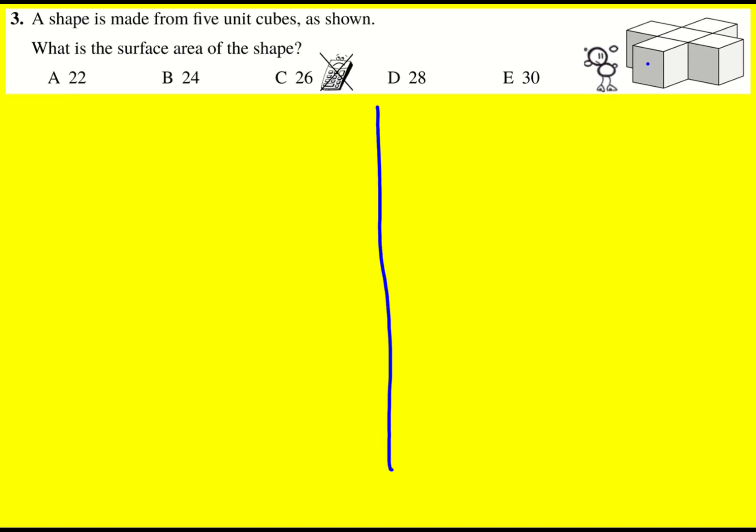We can either consider the cubes by themselves and there would then be six times... oh no, sorry, five. There's five cubes. So five cubes times six. That would be the number of faces on these five cubes.